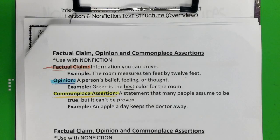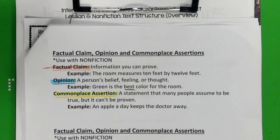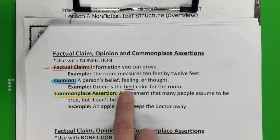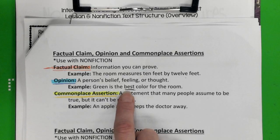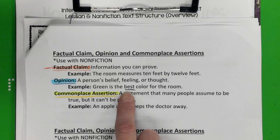The next one is opinion — a person's belief, feeling, or thought. For example: green is the best color for the room. The way I can tell if it's an opinion is if I can change it from a positive to a negative or a negative to a positive. The word 'best' — if I can switch it to 'worst,' then that's an opinion. You may think it's the best, but I think it's the worst. I'd rather paint my room blue.